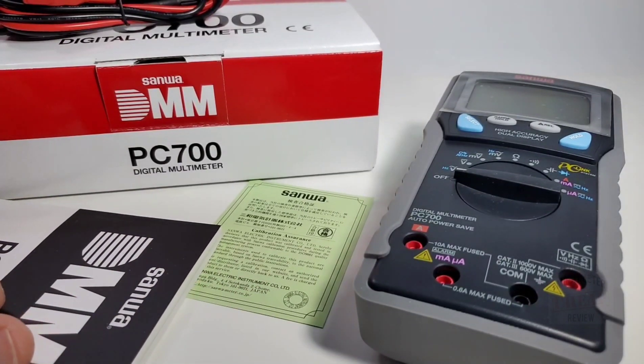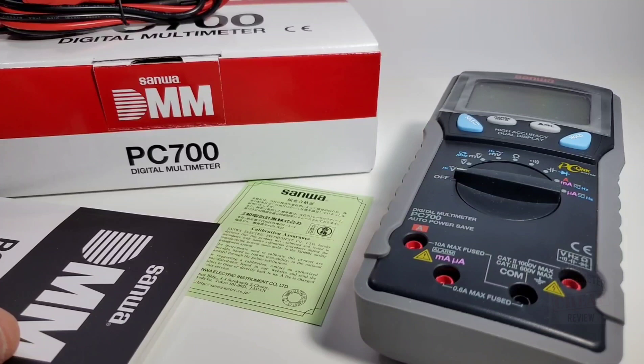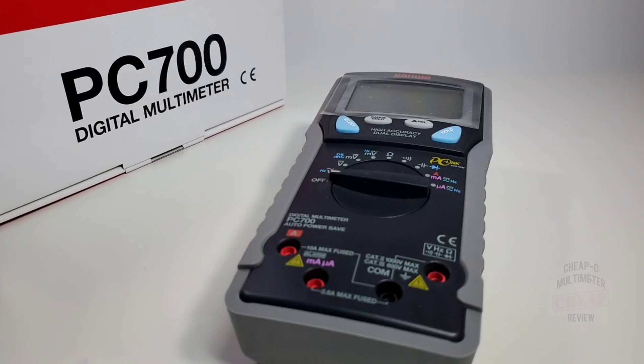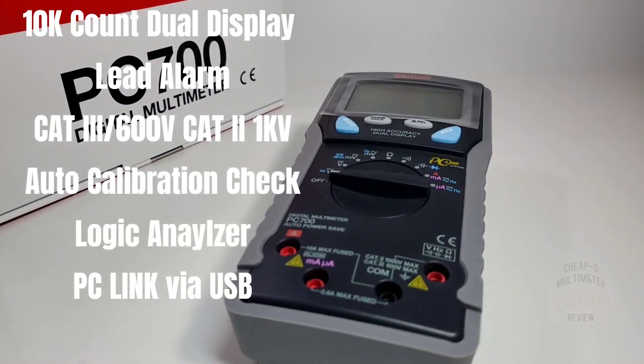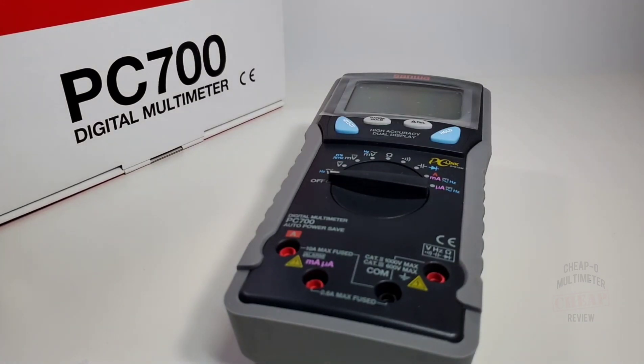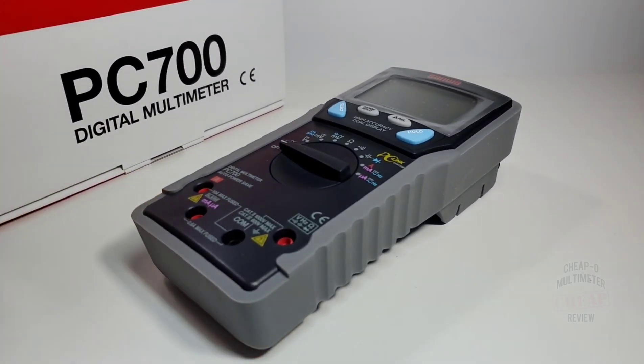The Sanwa PC700 has some pretty nice specs. It is a 10,000 count LCD display, CAT III 600 volt, CAT II 1000 volt. The bar graph updates 60 times per second. It has a dual display, voltage or current plus frequency. On the capacitance range, it's pretty nifty: 0.01 nanofarad all the way up to 25 millifarad. Some pretty decent specs on the PC700.